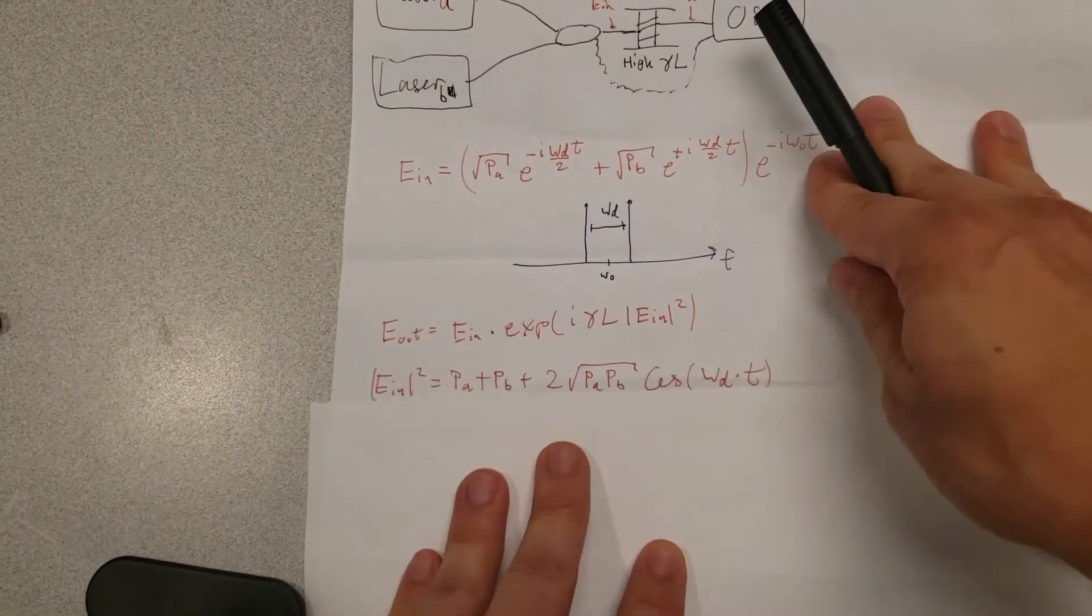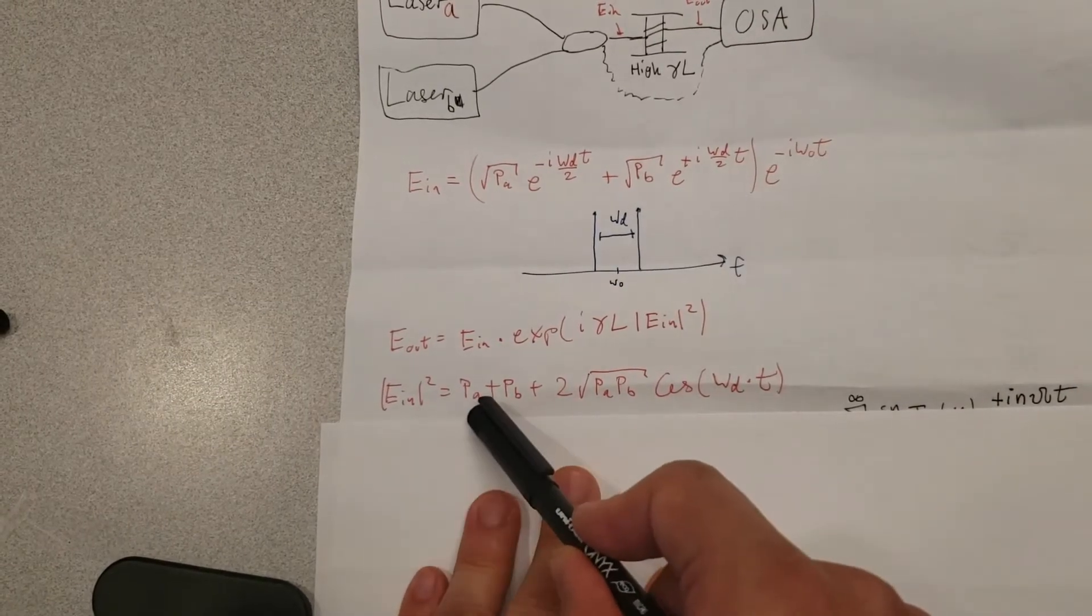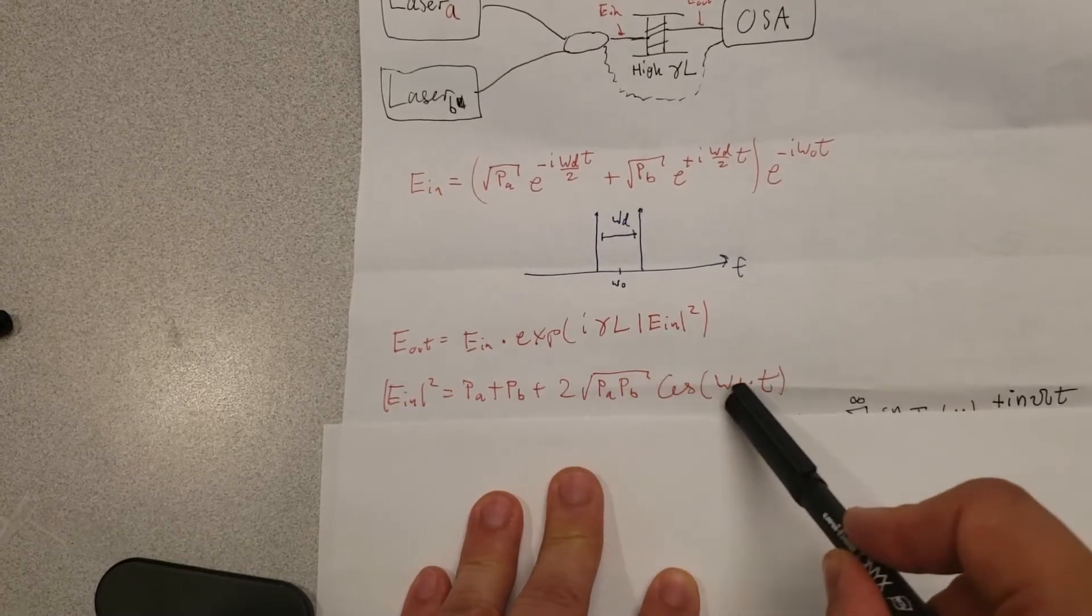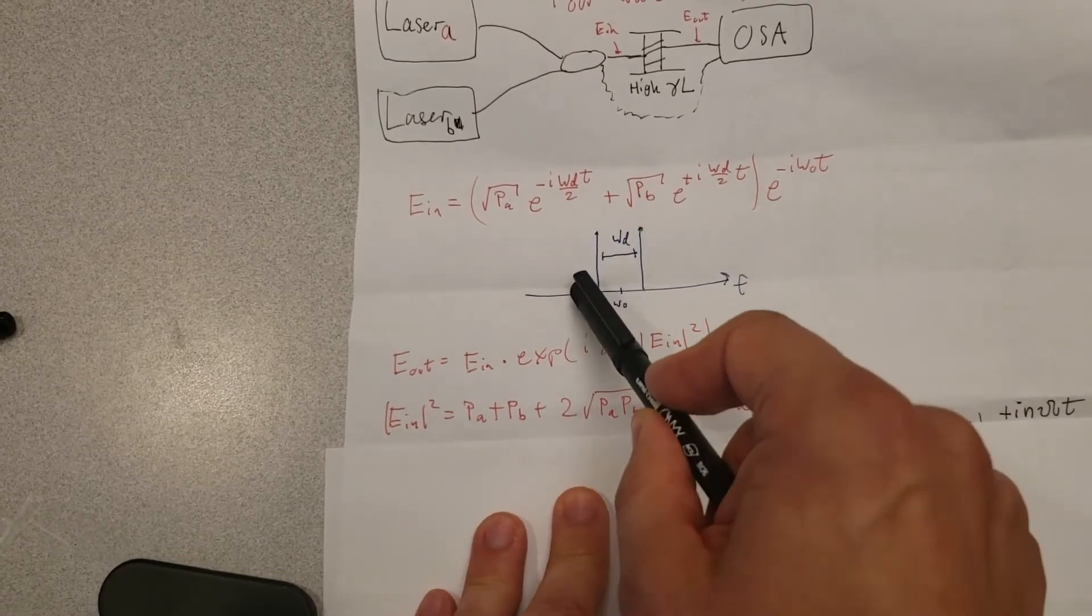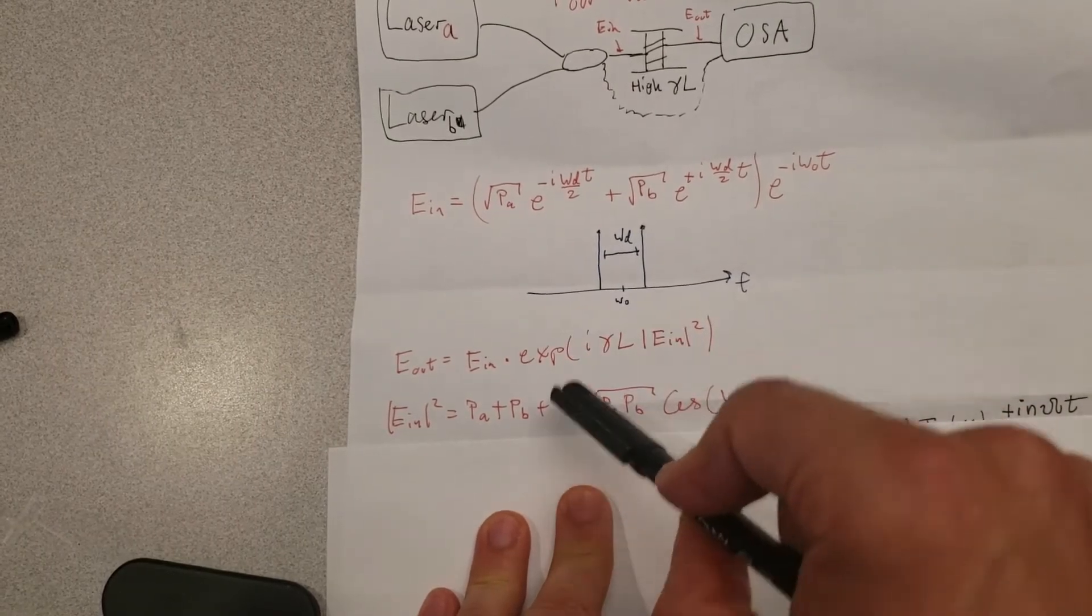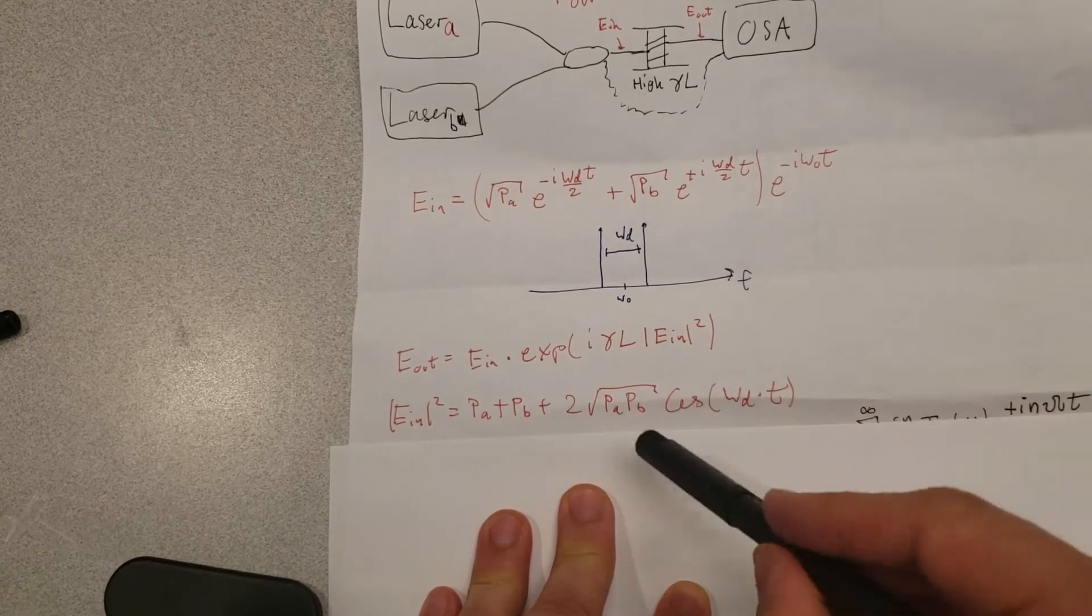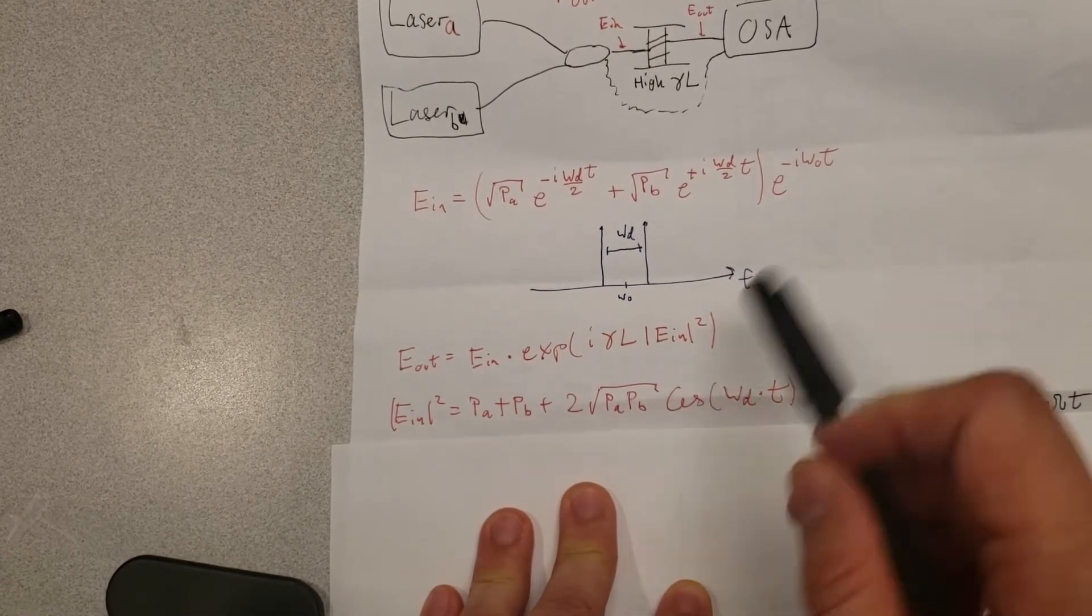If we calculate the power of the field, we'll see that it's going to be equal to some offset here and then we have this extra term that oscillates as a cosine function. Essentially these two laser frequencies interfere, causing the optical power to vary over time. So now we have this interesting situation where we'll get a complex exponential with a cosine function inside of it.